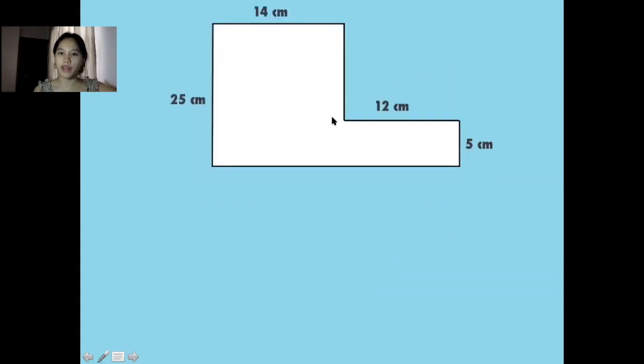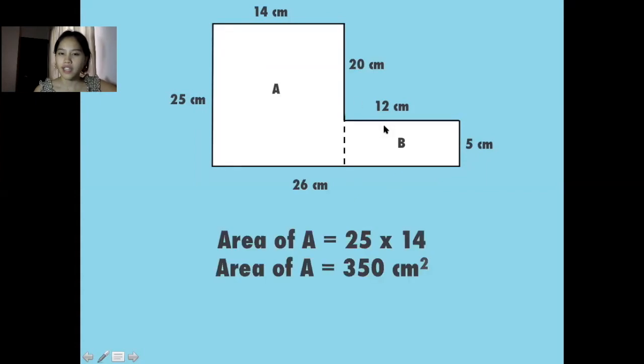What about a more complicated shape like this one? What we can do is we can section off this shape so that they form smaller rectangles like so. So now we can look for the area of this rectangle and the area of this rectangle, and then we can just add them together to form or to figure out the area of this entire shape.